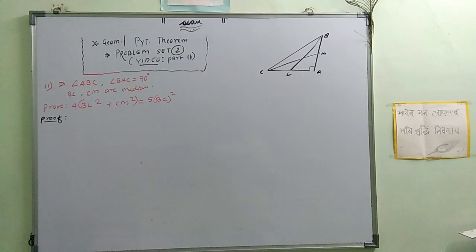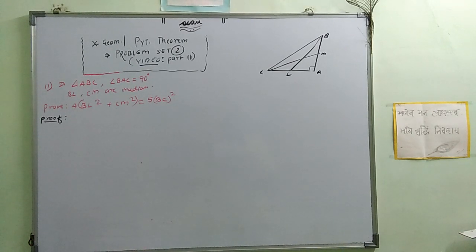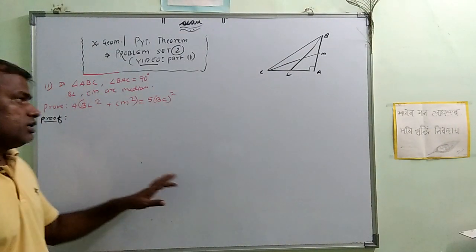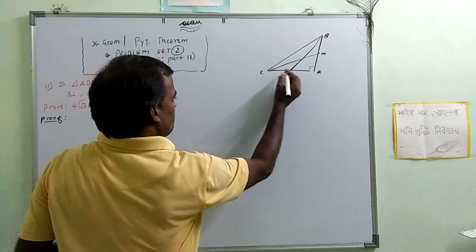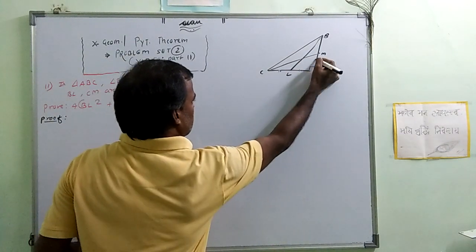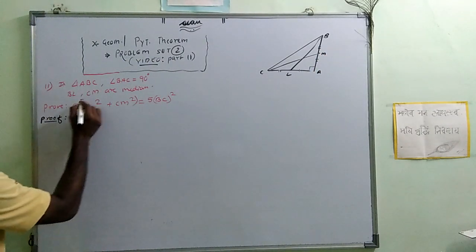Dear students, the next question: angle B equals 90 degrees in triangle ABC, and BL and CM are medians. Whenever there is a median, we can use Apollonius theorem, and Pythagoras as well because 90 degrees is there. So let's use this and solve. In triangle ABC, angle B is 90 degrees and these two are medians. M and L are the midpoints.